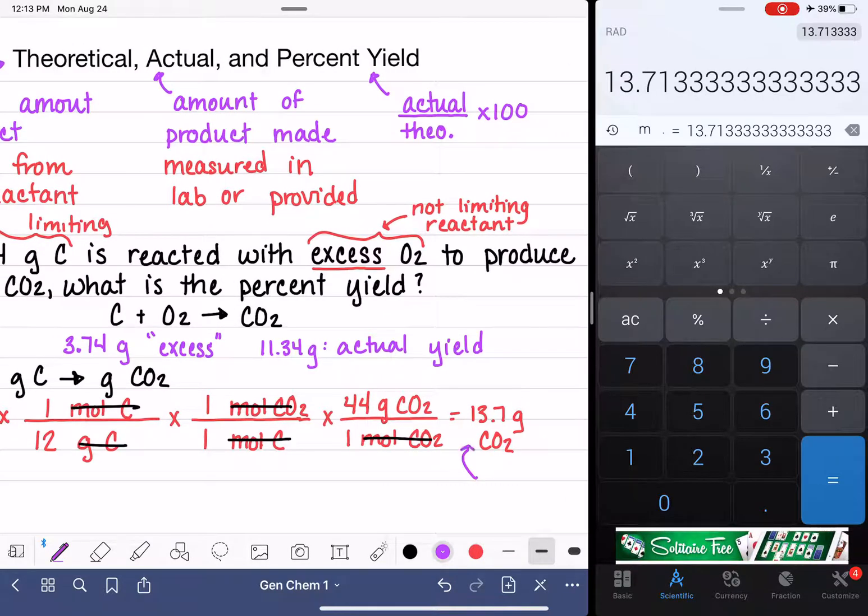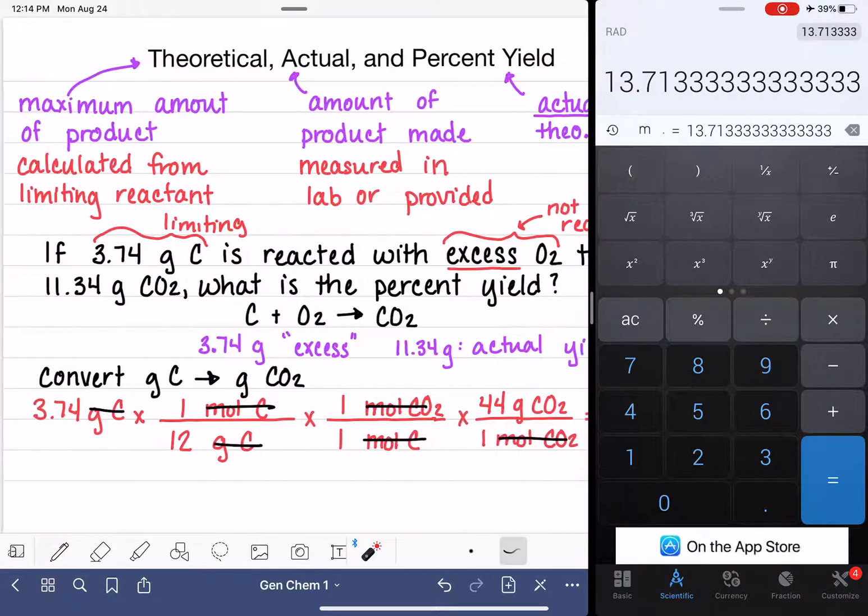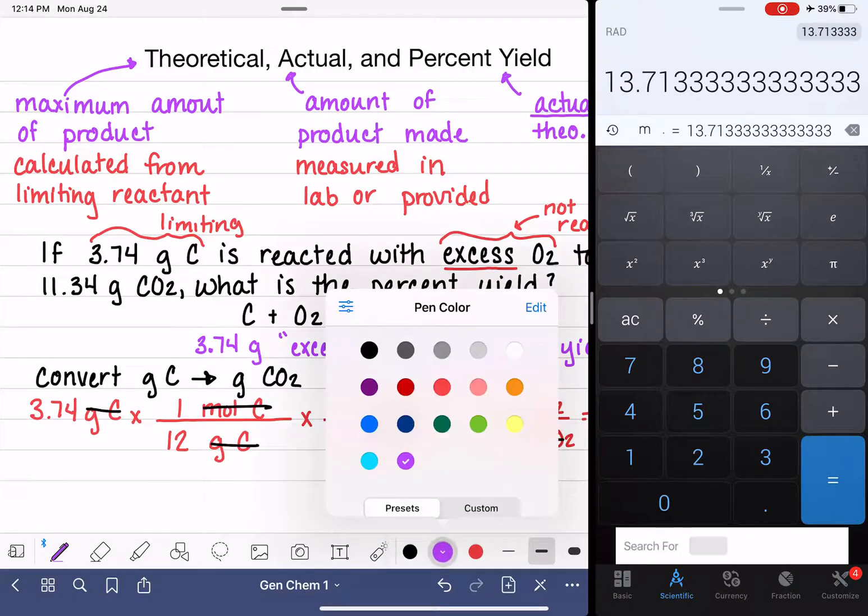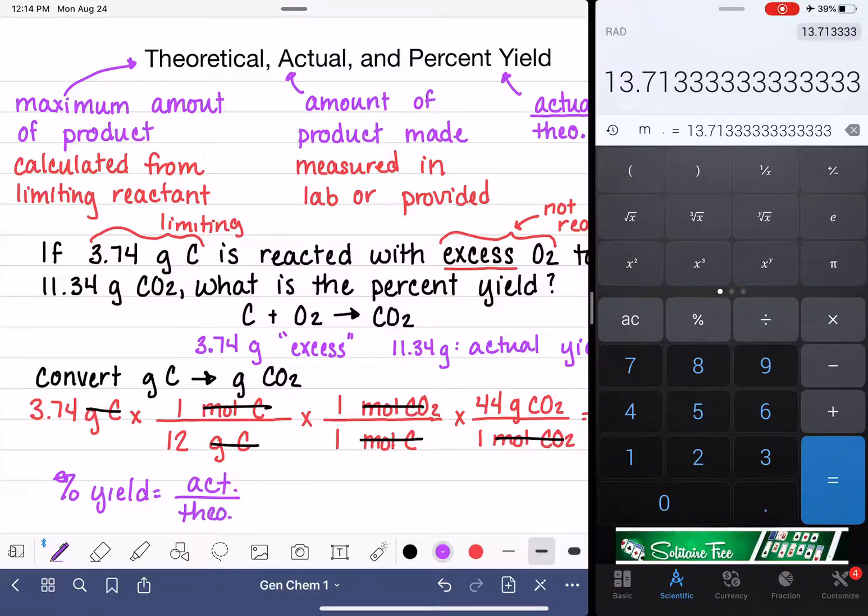We'll make a note that this is theoretical. So now we're ready for the percent yield calculation using this equation right here. We're going to do actual divided by theoretical.